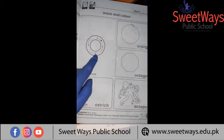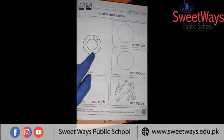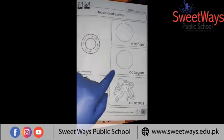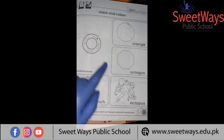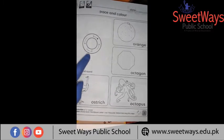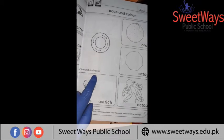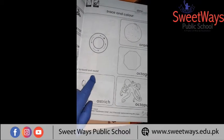O. O - orange. O - octagon. O - octopus. O - ostrich. O is round and round.